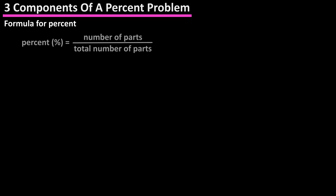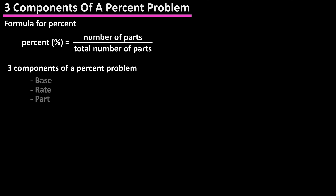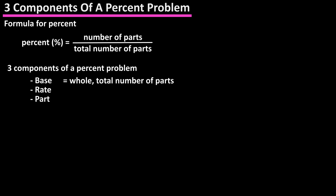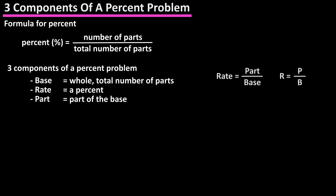The formula for percent is: percent equals a number of parts divided by the total number of parts. There are three components of a percent problem: the base, the rate, and the part. The base is the whole or total number of parts. The rate is a percent — a number followed by the percent sign. The part is a part of the base, a part of the total number of parts. So the formula is: rate R equals part P divided by base B.